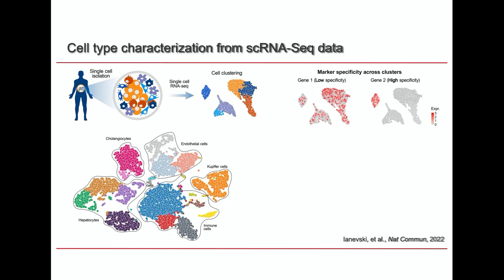With current single-cell technologies, one experiment allows studying thousands of cells, but usually the cell types are unknown a priori. So the challenge is to correctly assign the cell type to each cell. Usually it's done by first doing cell clustering, then using marker genes to distinguish between different clusters, ideally finding highly specific marker genes for each cluster. Then experts in cell types need to manually check, verify, and assign the final cell type. But as you can imagine, it's a labor-intensive process and prone to errors.